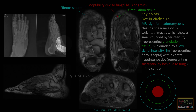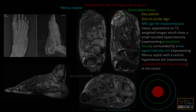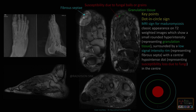This dot in circle sign is classically seen in case of Madura mycosis. On MRI, you can see soft tissue swelling with diffuse sclerosis and destruction of the metatarsals. The classical dot in circle appearance shows: a central hyperintense area (granulation tissue, depicted by green arrow), surrounded by a hypointense rim (fibrosepta, depicted by blue arrow), and a central hypointense dot representing the fungus showing susceptibility artifacts.